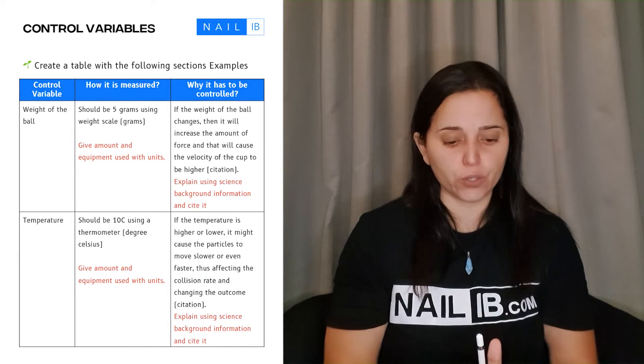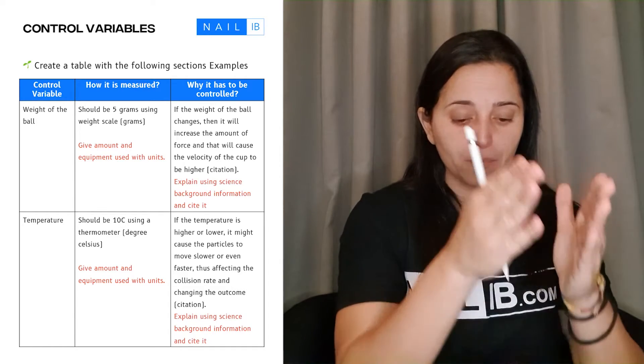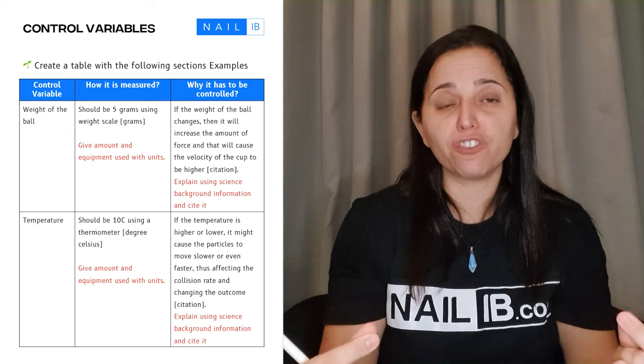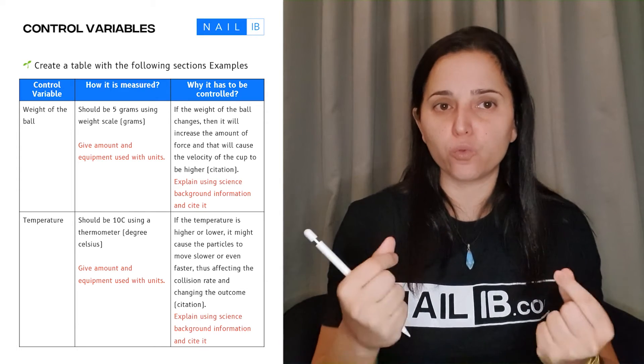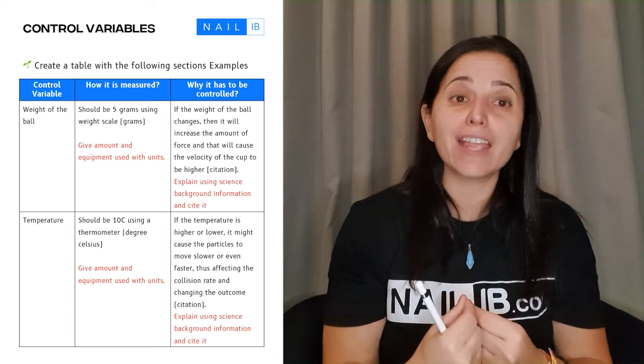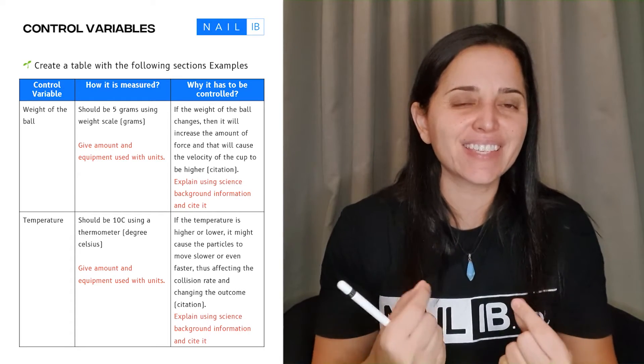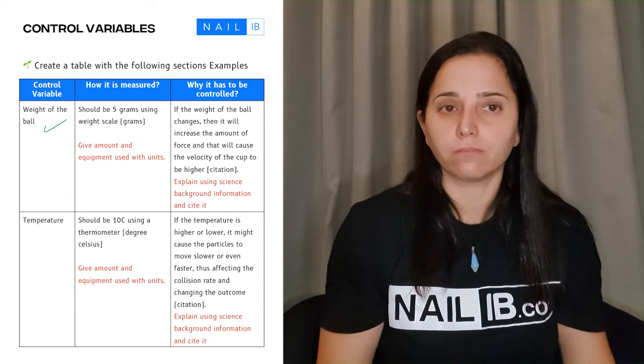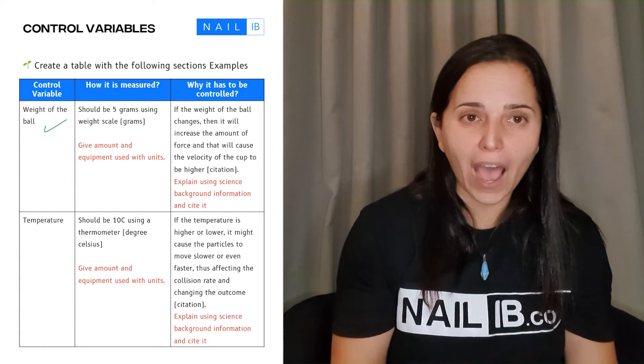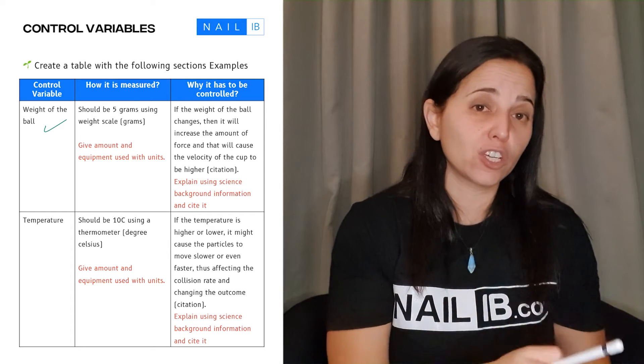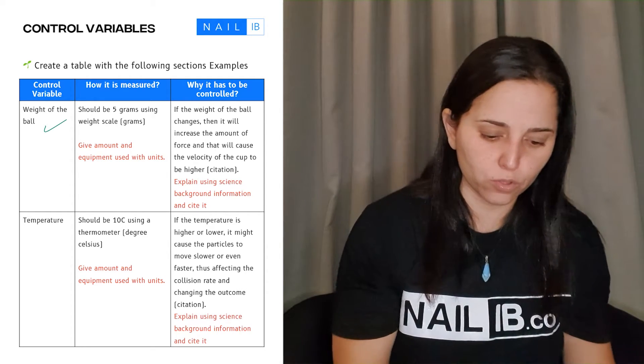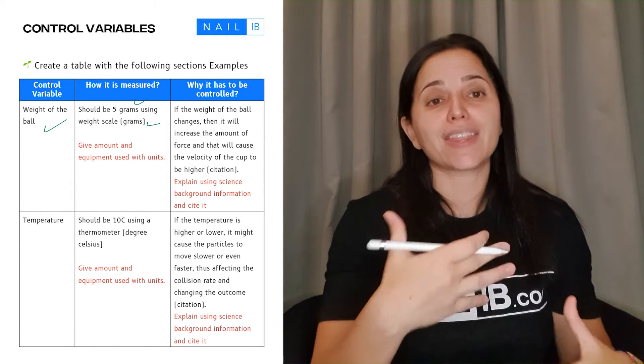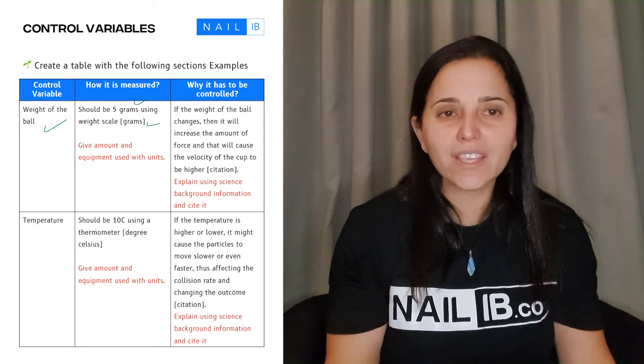So here is a table that you can use. You have the control variable in one column, you have how it is measured, and why it is controlled - because this is how you're going to prove to the IB examiner that you know the reasons to control, why you're controlling it, and you know the things that must stay the same throughout the experiment to make this experiment reliable. So here you see the weight of a ball - how it is measured: five grams using weight scale with the unit of that weight scale. That's how you're showing what are the equipment. What is the why?